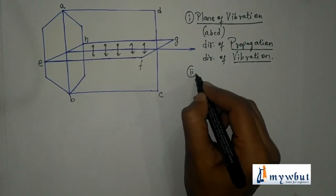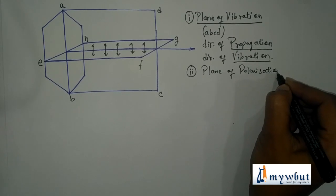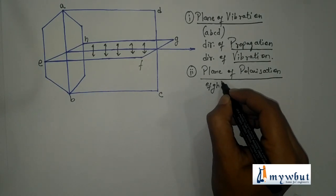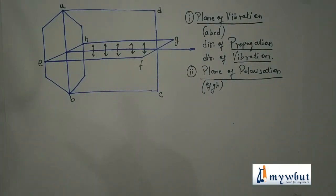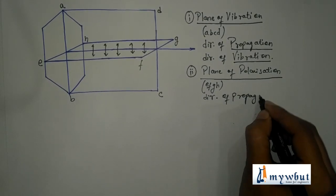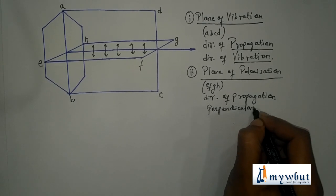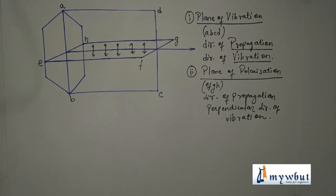The plane of polarization is plane EFGH in the diagram. This plane contains the direction of propagation of light but is perpendicular to the direction of vibration. So the plane of polarization is perpendicular to the direction of vibration and contains the direction of propagation. This is the definition of the plane of vibration and the plane of polarization.